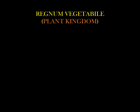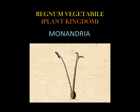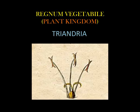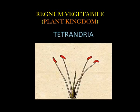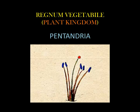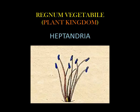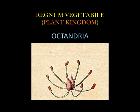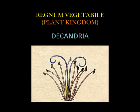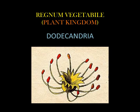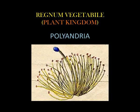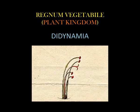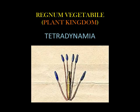Regnum Vegetabile, the plant kingdom. Using the sexual system, he classified the plants into 24 classes: Monandria, Diandria, Triandria, Tetrandria, Pentandria, Hexandria, Heptandria, Octandria, Enneandria, Decandria, Dodecandria, Icosandria, Polyandria, Didynamia, Tetradynamia, Monadelphia.